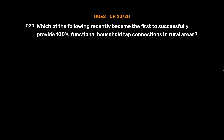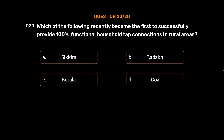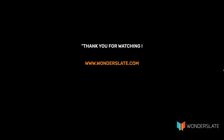Question No. 20: Which of the following recently became the first to successfully provide 100% functional household tap connections in rural areas? Option A: Sikkim. Option B: Ladakh. Option C: Kerala. Option D: Goa. The correct answer is Option D: Goa.